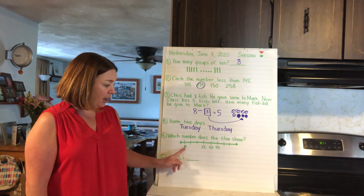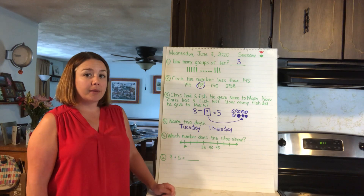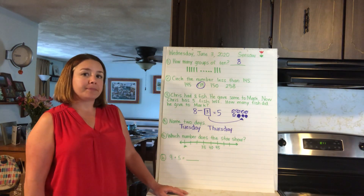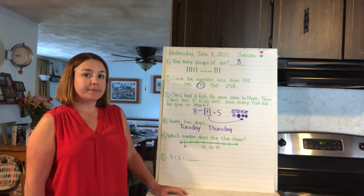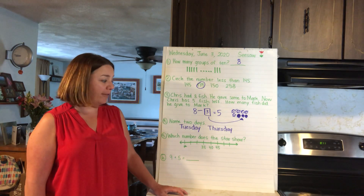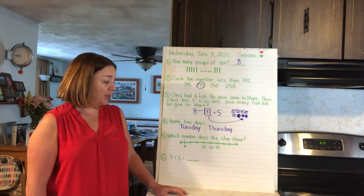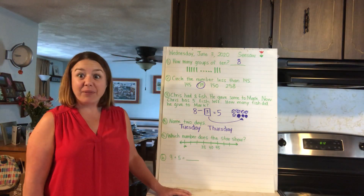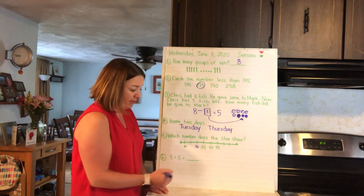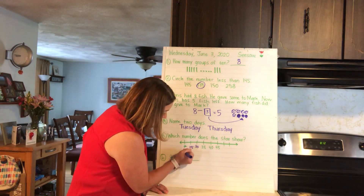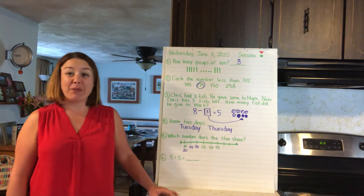Number five: which number does the star show? Here's my number line with numbers 35, 40, 45 — figure out what number the star is pointing to. What are we counting by? 35, 40, 45 — you're counting by fives! So we count backwards by fives: 45, 40, 35, 30, 25, 20. The star is the number 20. Counting by fives: 20, 25, 30, 35, 40, 45.